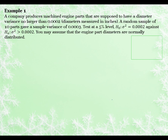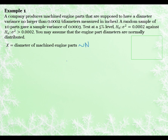Our first example: a company produces machined engine parts that are supposed to have a diameter variance no larger than 0.0002 square inches. A random sample of 10 parts gave a sample variance of 0.0003, and we want to test at a 5% level of significance that the variance equals 0.0002 against the alternative that the variance is greater than that. You may assume the engine part diameters are normally distributed. Here x is the diameter of the machined engine parts, which is normally distributed, and s squared is the variance of the 10 sampled part diameters.